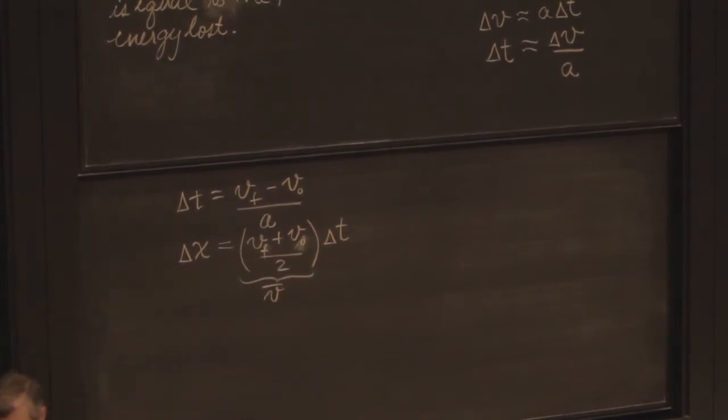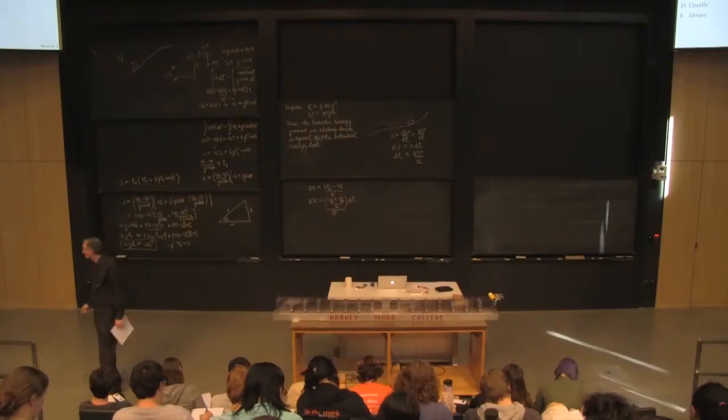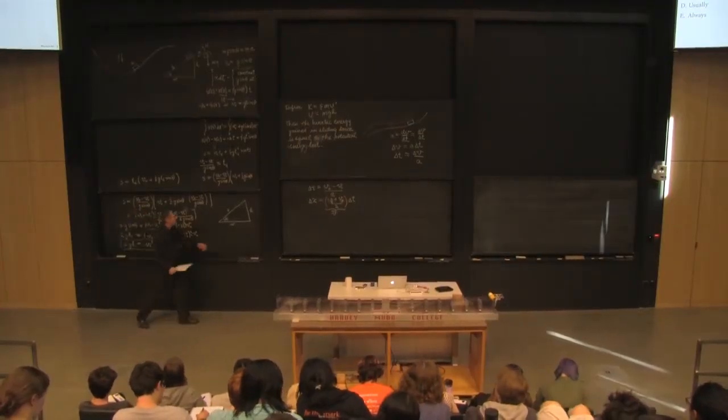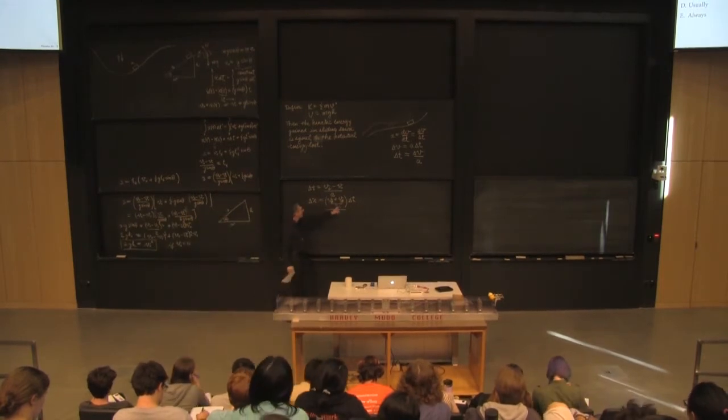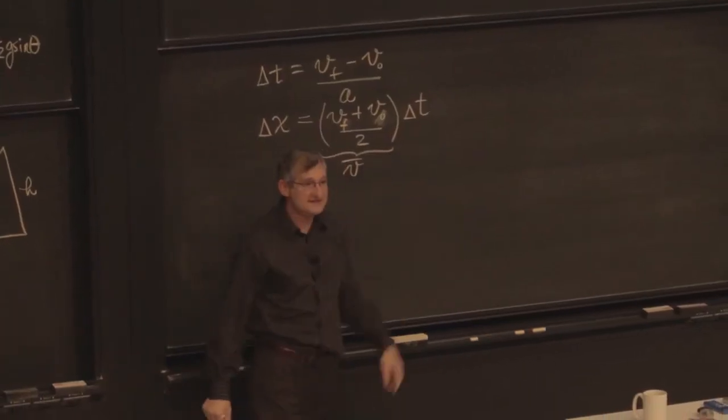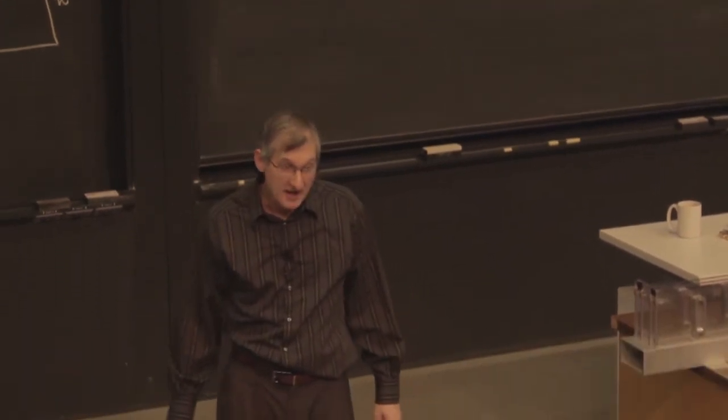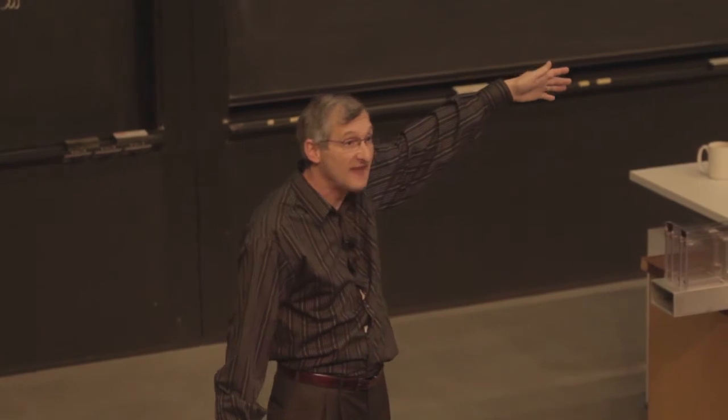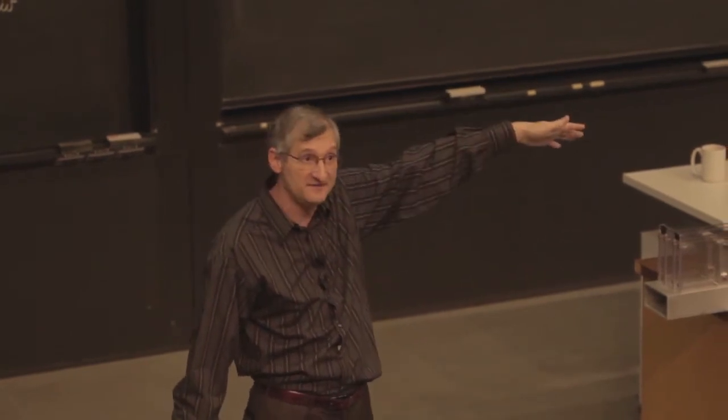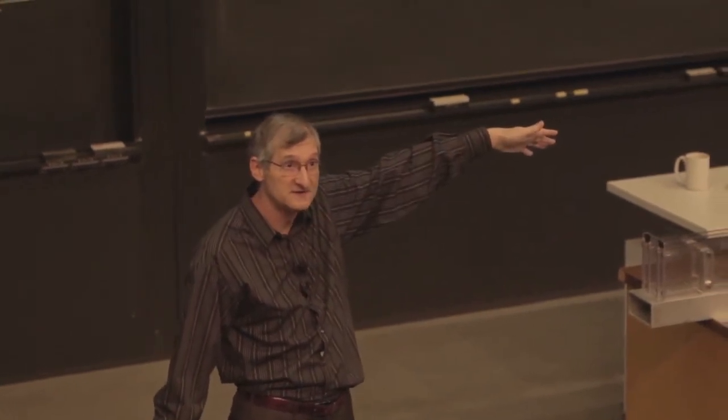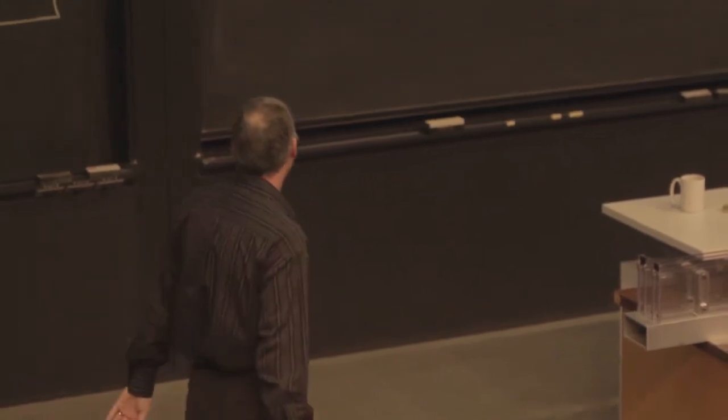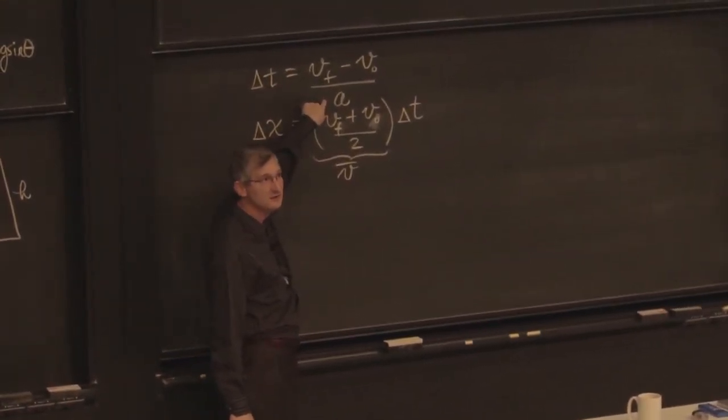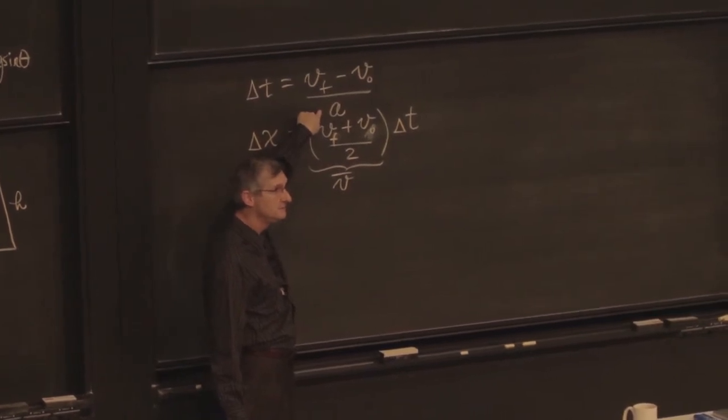Now, if a is a constant, like in this problem, then it doesn't matter how long I take delta t. This will still be good. But if a is changing because the slope is changing, then I'm going to start screwing up if I take a big interval. Does that make sense to people? Because I'm going to have to have different a's for different intervals.